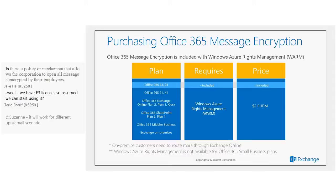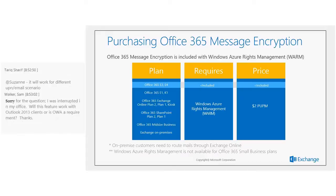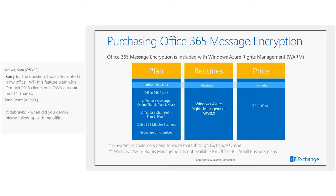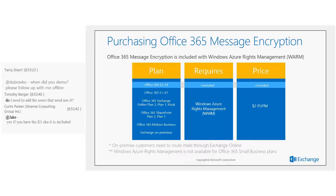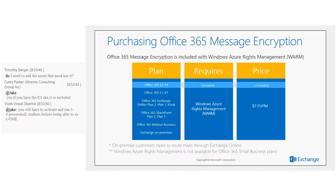The price stays at $2 per user per month. Because Windows Azure Rights Management is already included with Office 365 E3 and E4 suites, those customers will already see Office 365 Message Encryption light up in their tenants and can simply configure and start using it immediately. The SKU is also available as an add-on for other plans such as Office 365 E1, K1, Exchange Online Plan 1 and Plan 2, for $2 per user per month.